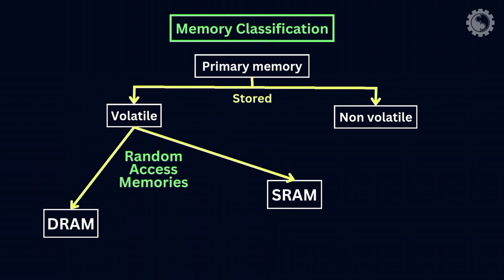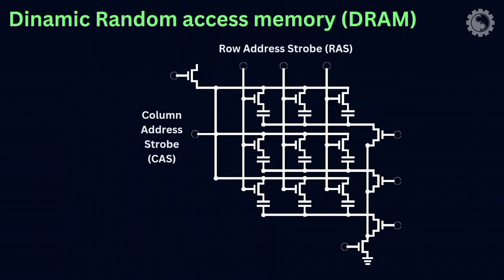The most common type of computer memory is dynamic random access memory (DRAM). DRAM is made up of millions of tiny memory cells, each containing a transistor and a capacitor. The capacitor stores the electrical charge that represents the bit of data. The transistor acts as a switch that allows the computer to read or write data to the memory cell.